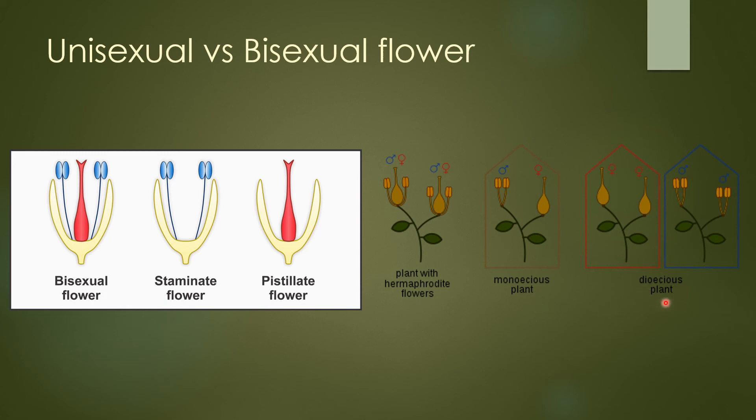The next type is the dioecious plant. Here the male plant and the female plant are totally separate, so it is known as a dioecious plant.